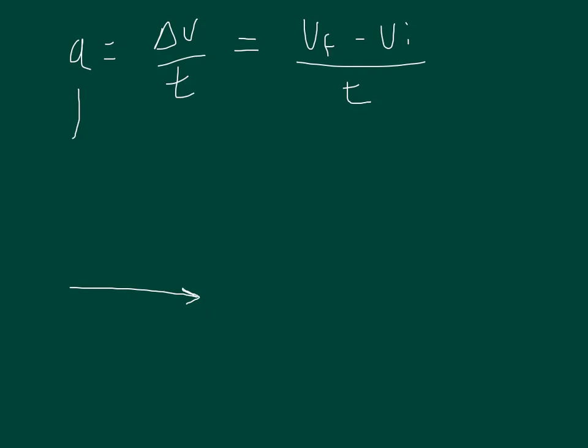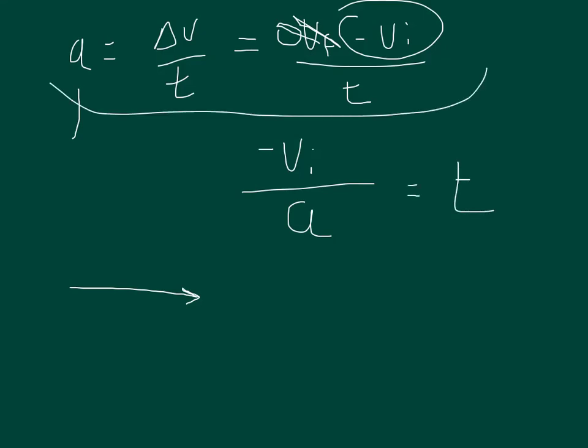I just have to know my initial velocity and the acceleration, and I can solve for time. The formula for that would be negative of the initial velocity divided by acceleration equals the time. And all I did was just manipulate this formula right here.